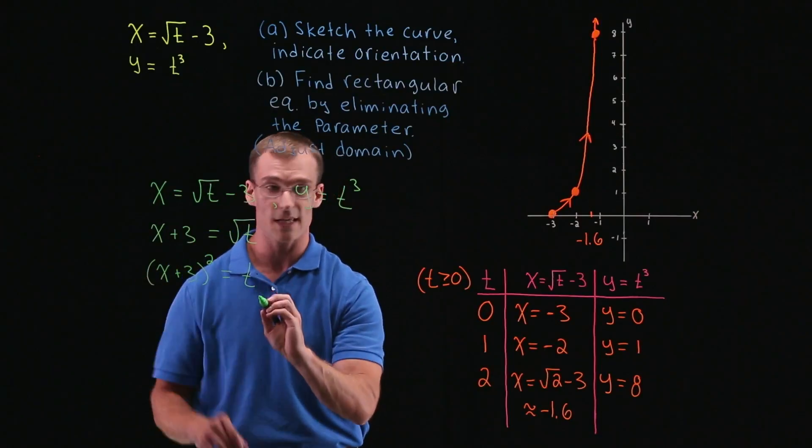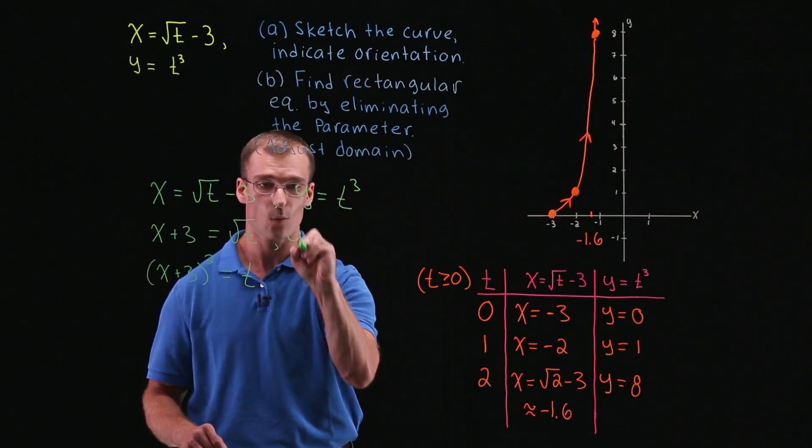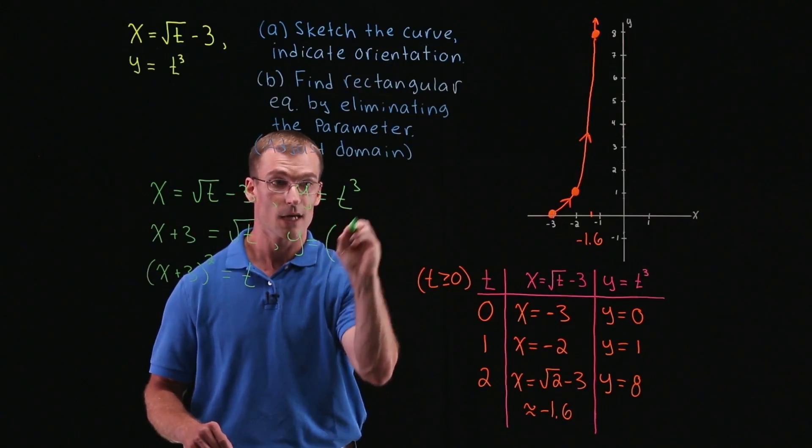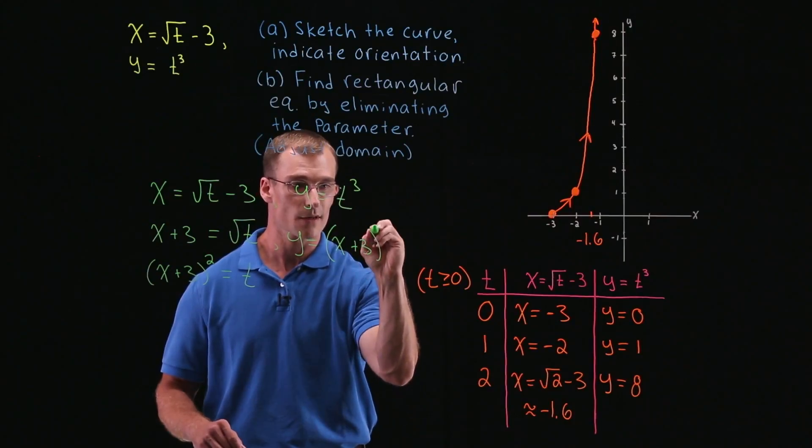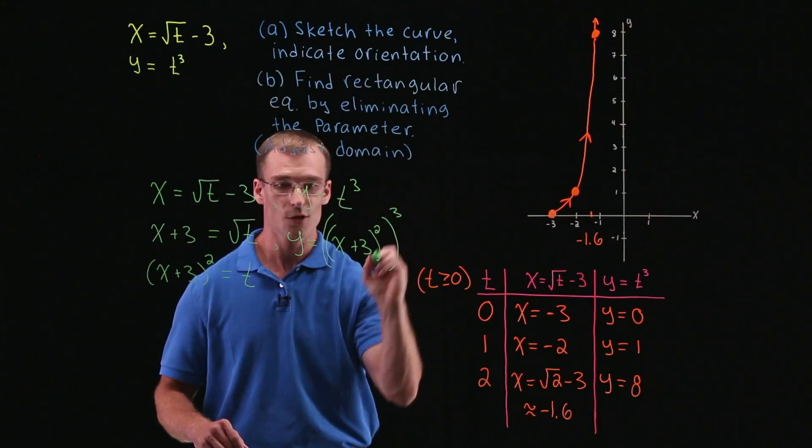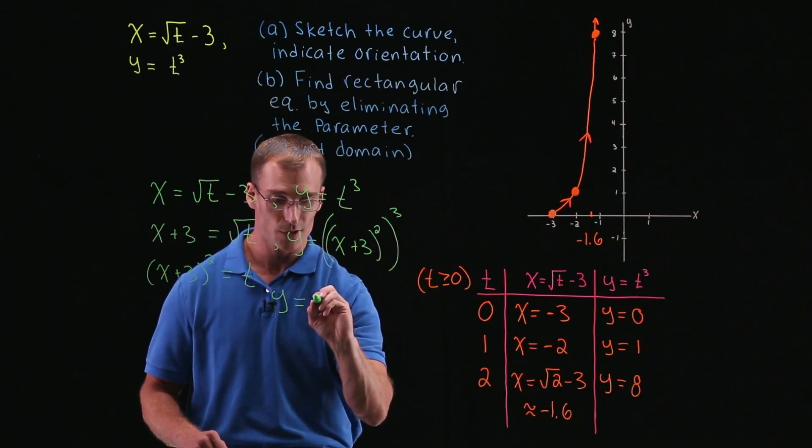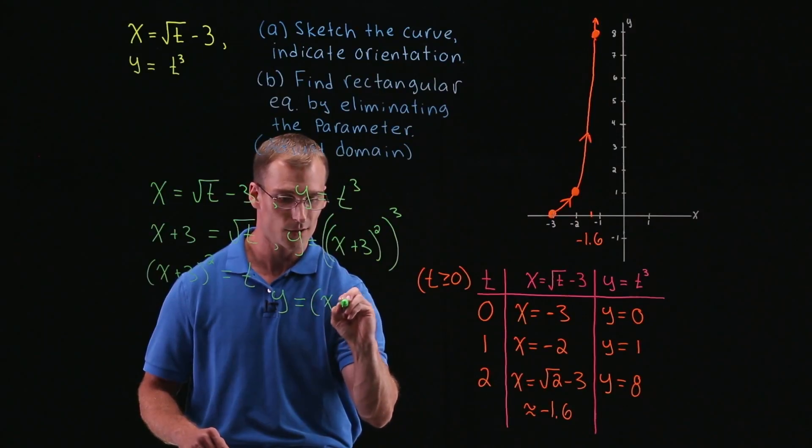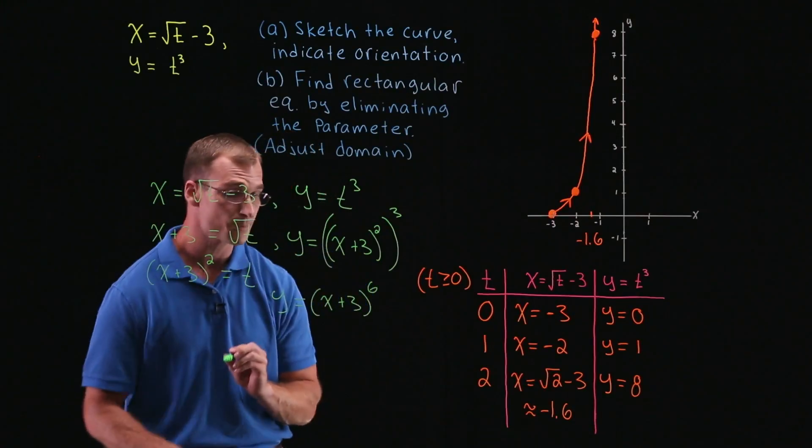And like we said, so now we're going to plug that value of t in for y, so here we're going to have y is equal to t cubed, but t is equal to x plus 3 quantity squared cubed. So that gives us that y is equal to the function x plus 3 quantity to the sixth power.